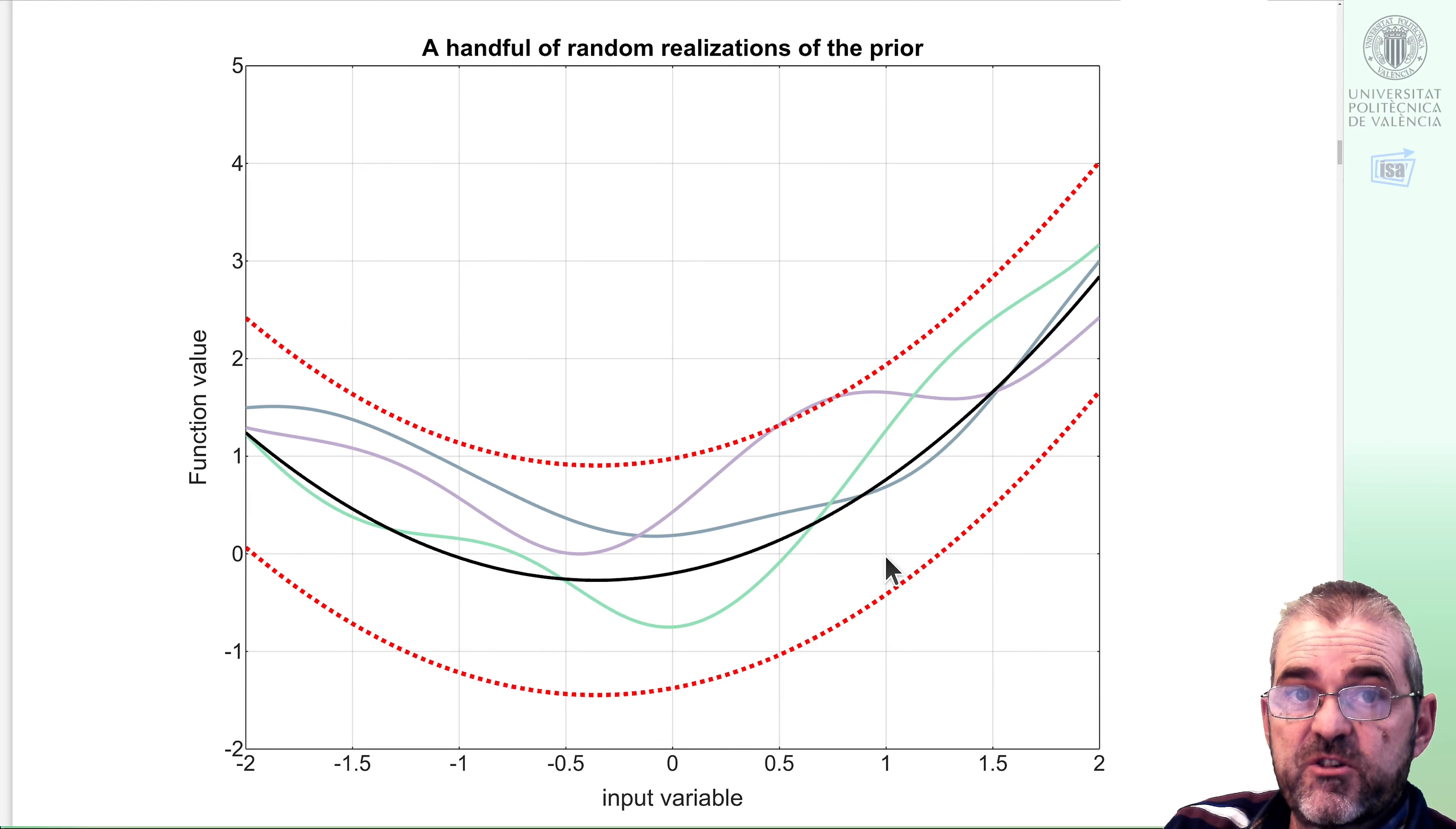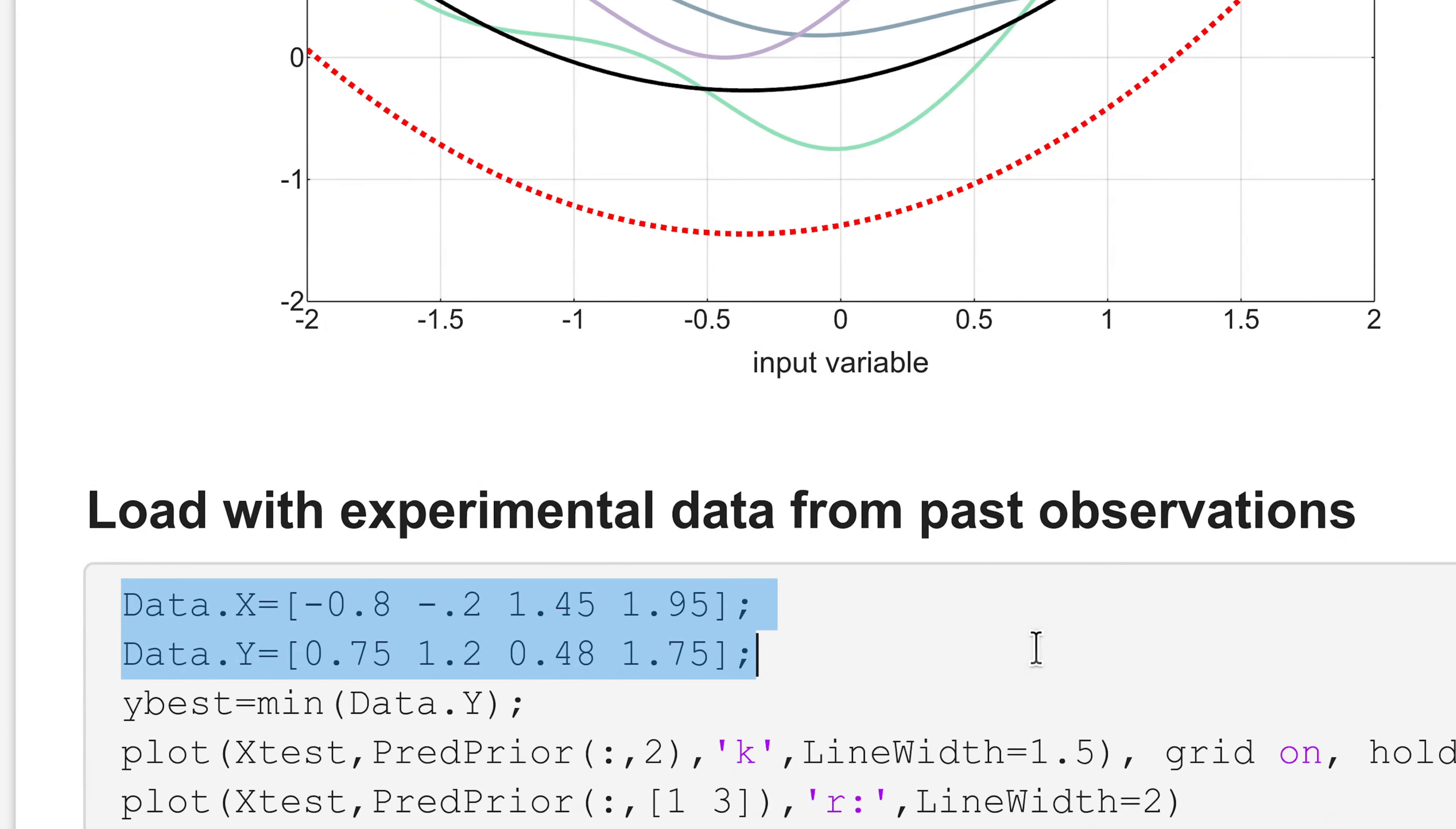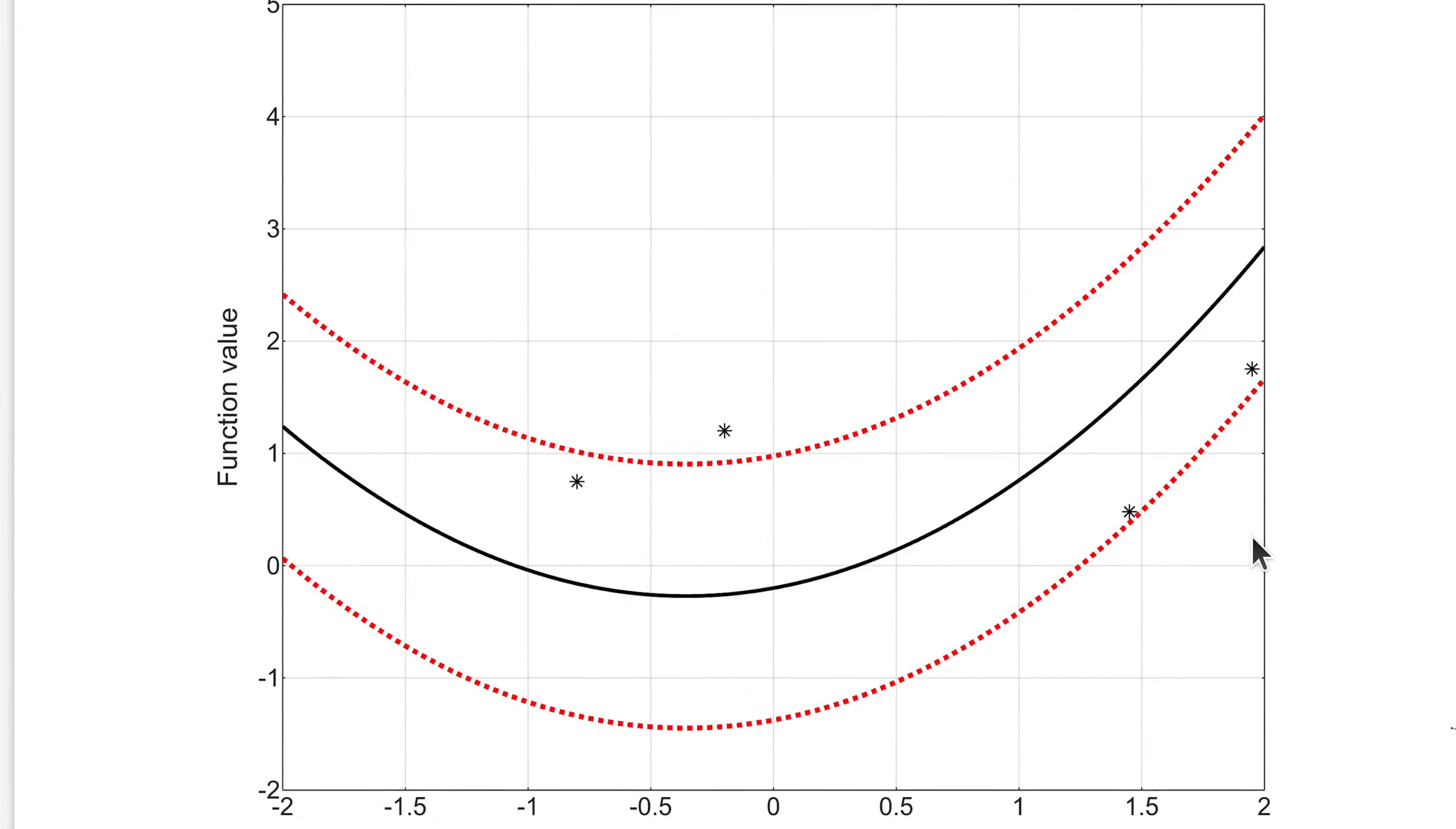I think that the true function to optimize may have the shape in these kind of curves in lighter colors. Then in Bayesian optimization, we have a previous history of experimental results. For instance, we will load my Gaussian process with four points in x and four points in y. So this is the prior plus the observed values, the black stars. We may think that all of them are kind of at the edge or even outside the confidence intervals, so maybe my prior should be modified.